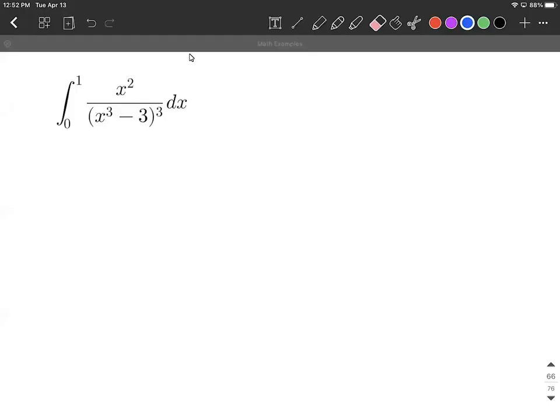On this example we're going to be taking the definite integral of a rational function by using a u substitution. So what we want to do is identify what we're going to use for our u.